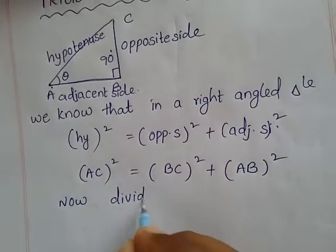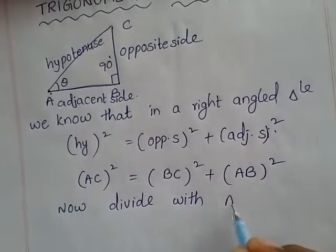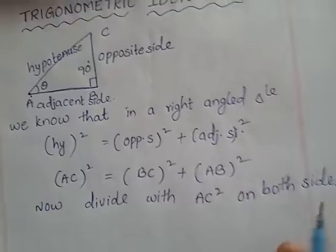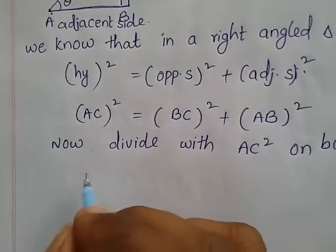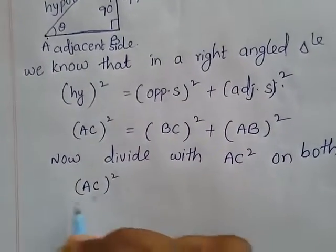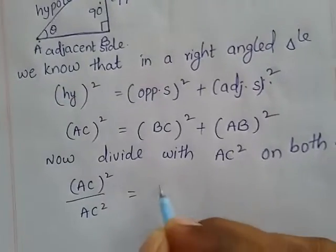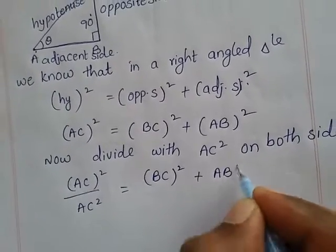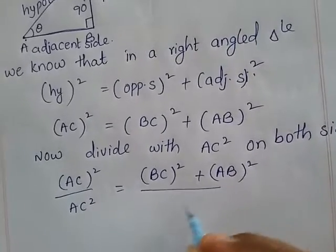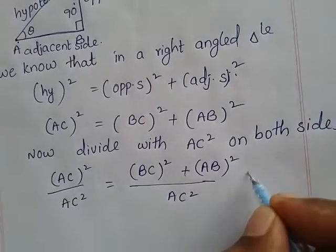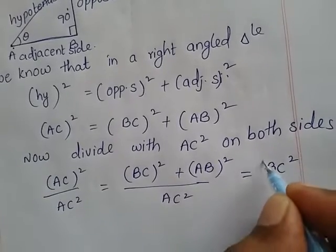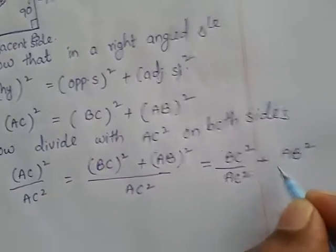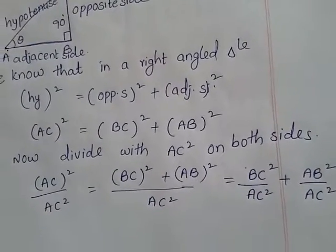Now divide both sides by AC square. On the left side, AC square divided by AC square gives 1. On the right side, you can split this as BC square by AC square plus AB square by AC square.